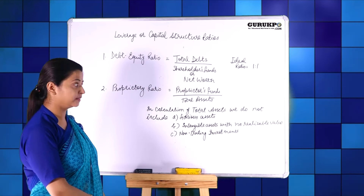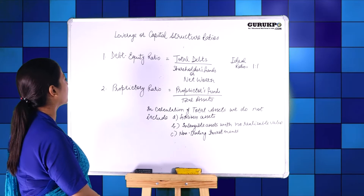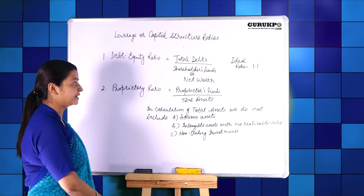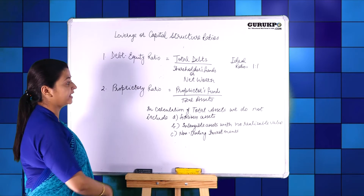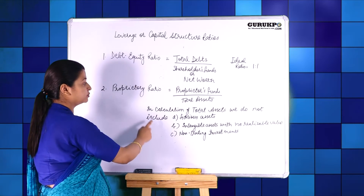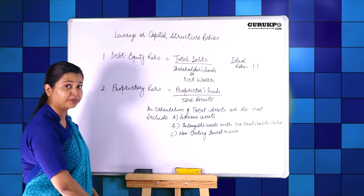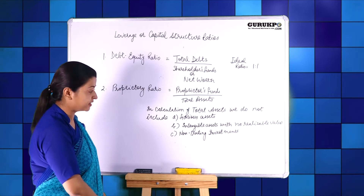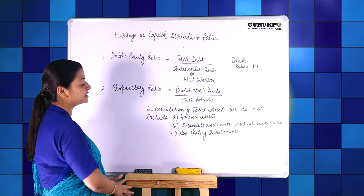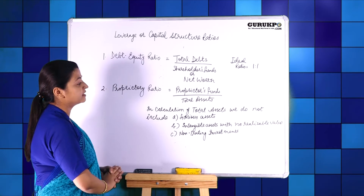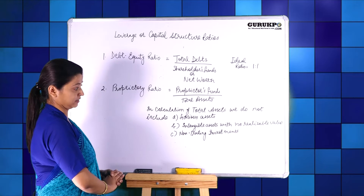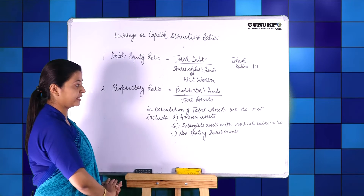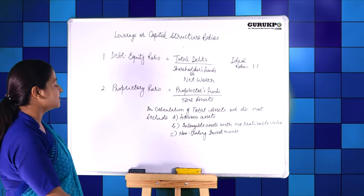The next ratio is the proprietary ratio. Its formula is proprietors' fund divided by total assets. While calculating total assets, we do not include fictitious assets like preliminary expenses, discount on issue of shares, intangible assets like patents and goodwill whose realizable value is zero, and non-trading investments.